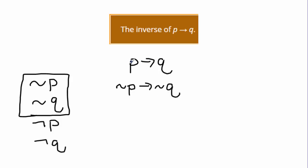Whatever your conditional statement is, you do the negation of each one. And this is the symbol we're going to use for the negation. In any case, you would read it as not p implies not q.